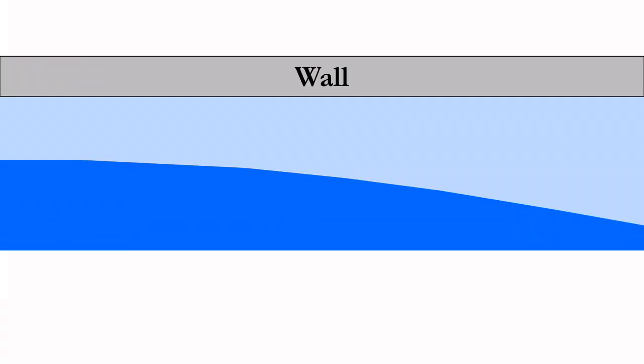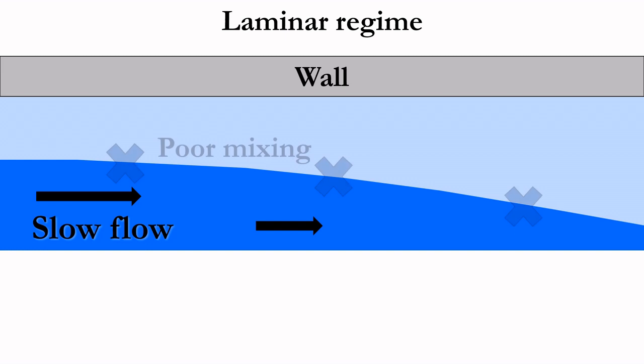There are other impacts of changing the flow rate as well. At too low of a flow rate, the fluid enters a laminar flow regime. At these conditions, there is little mixing of fluid at the wall.